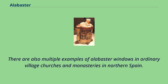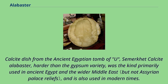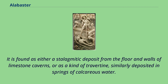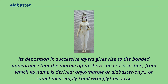There are also multiple examples of alabaster windows in ordinary village churches and monasteries in northern Spain. Calcite alabaster, harder than the gypsum variety, was the kind primarily used in ancient Egypt and the wider Middle East, and is also used in modern times. It is found as either a stalagmitic deposit from the floor and walls of limestone caverns, or as a kind of travertine, similarly deposited in springs of calcareous water. Its deposition in successive layers gives rise to the banded appearance that the marble often shows on cross-section, from which its name is derived: onyx marble, alabaster onyx, or sometimes simply onyx.